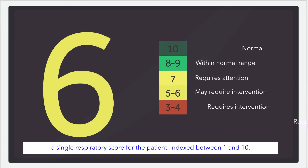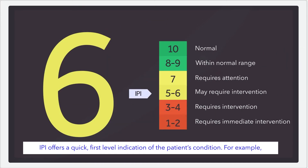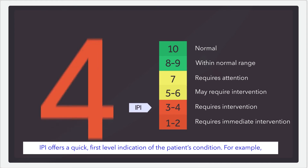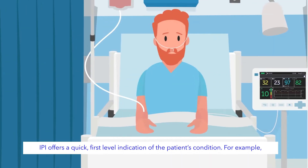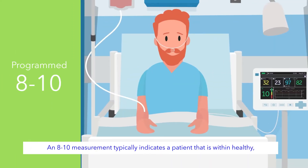Indexed between 1 and 10, IPI offers a quick, first-level indication of the patient's condition. For example, an 8 to 10 measurement typically indicates a patient that is within healthy normal range.